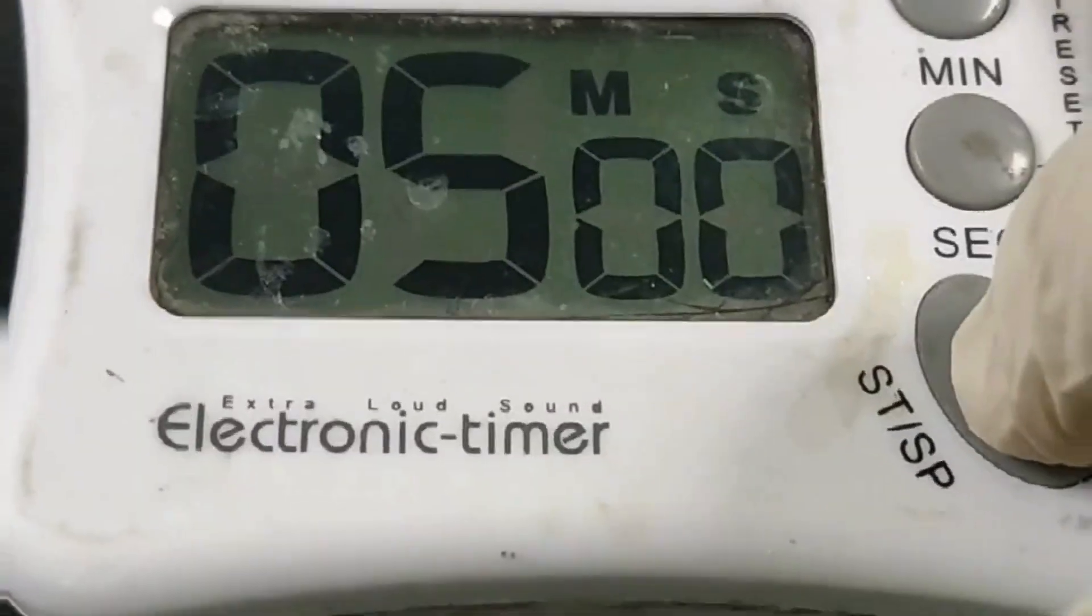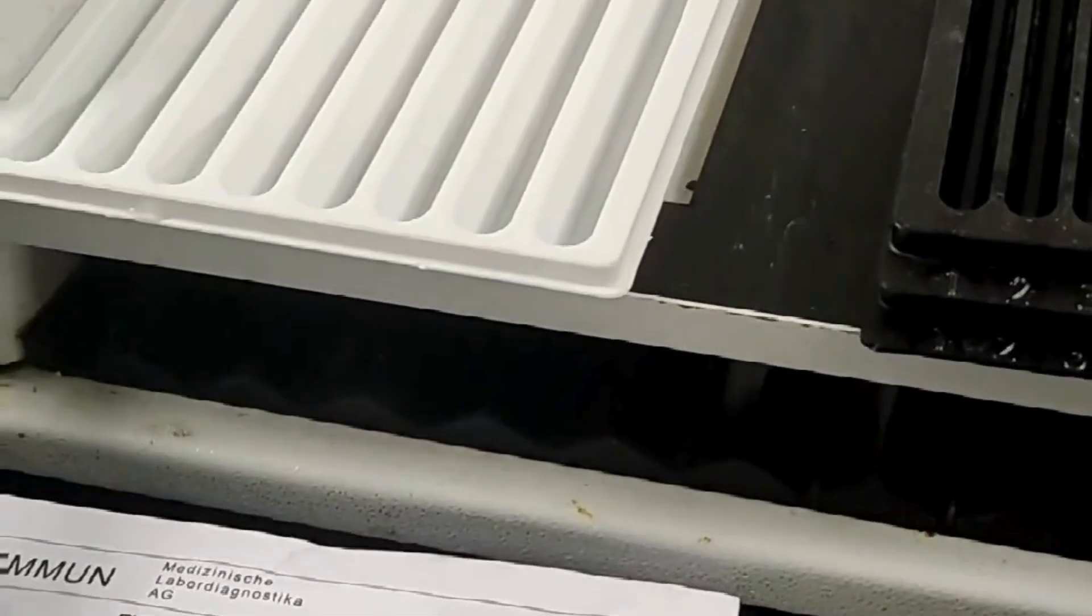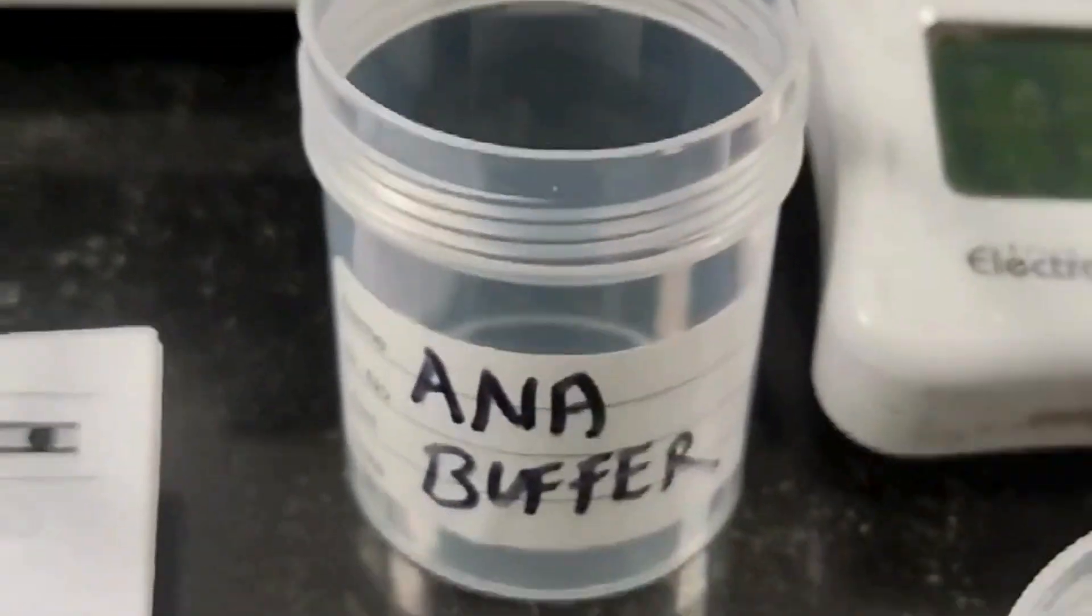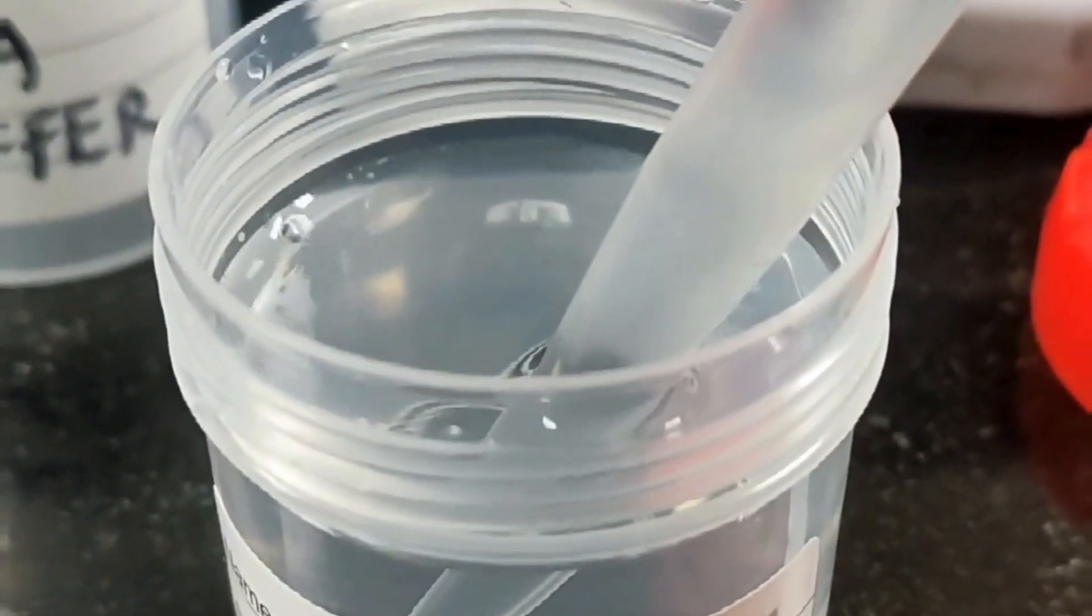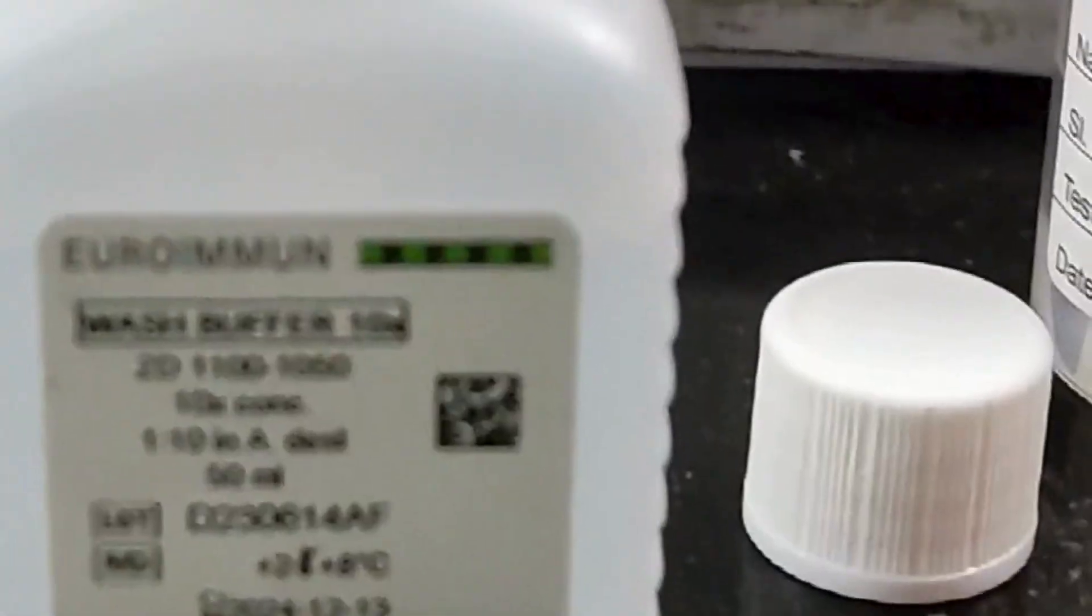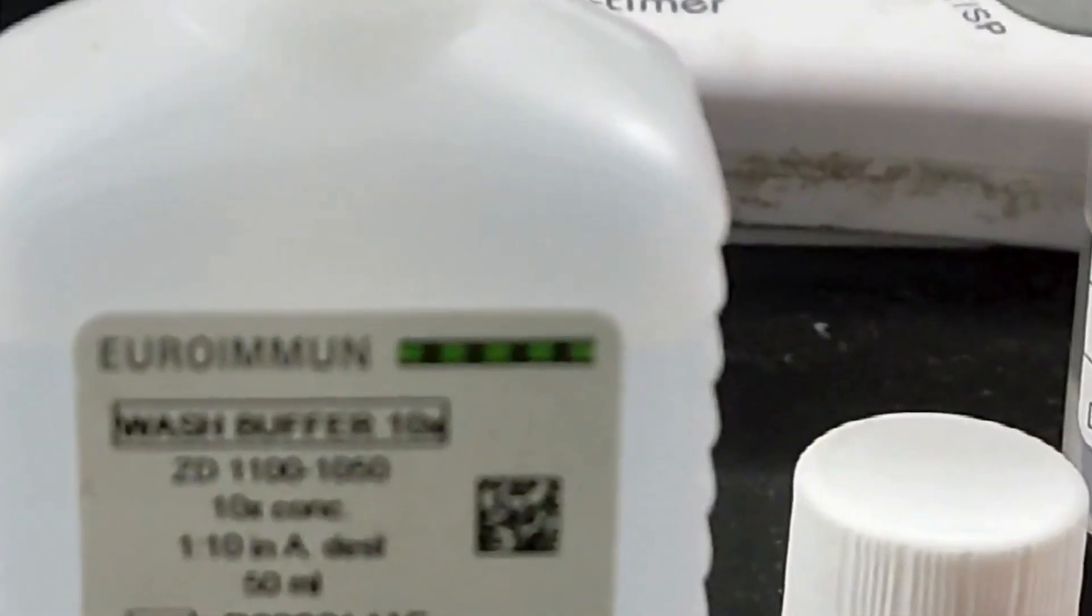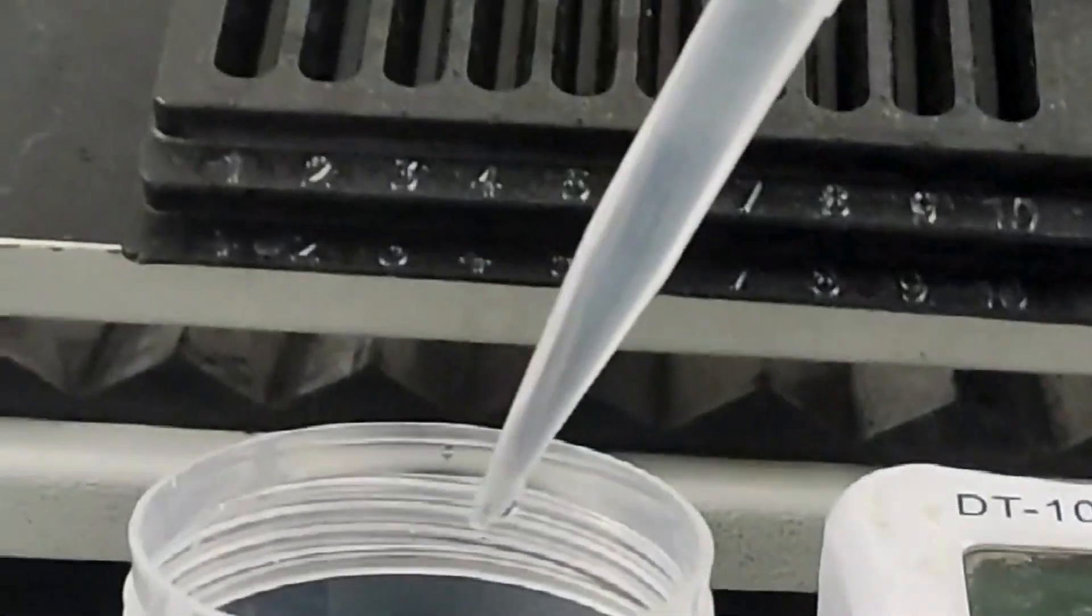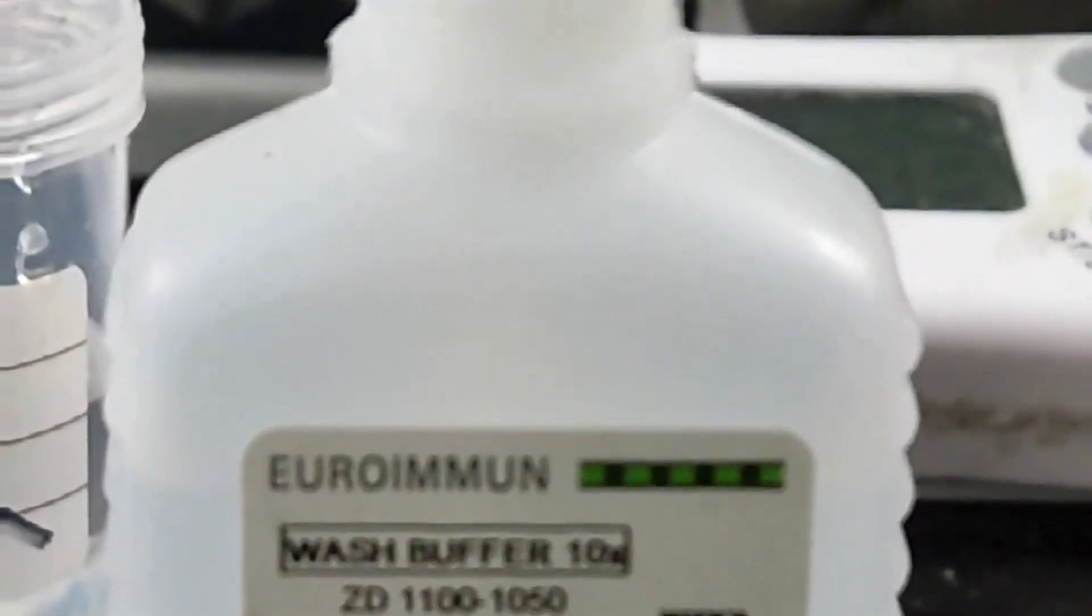Leave it for five minutes. Now our next step would be preparation of wash buffer in 10x concentrate as you can see here. Meanwhile we are performing ANA profile of three samples, so I am going to dilute three milliliter of wash buffer with 27 milliliters of distilled water to make desired concentration.